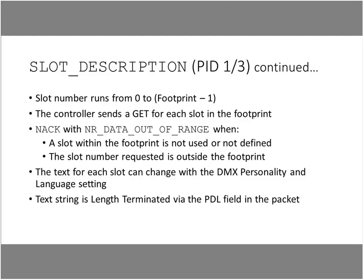If you ask for a slot number outside the range of the footprint, you'll get a NACK — meaning the device doesn't understand the request — with a reason code of data out of range. The text in the Slot Description can also change with the DMX personality and language setting. Depending on what mode and personality the fixture is in, the functions of slots can change. It is important that slot descriptions match the function for the personality that is currently active.